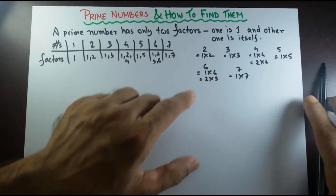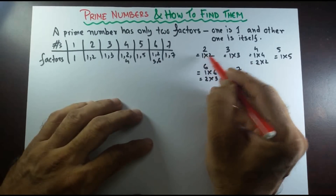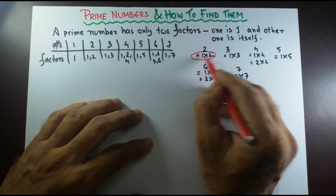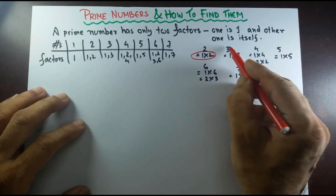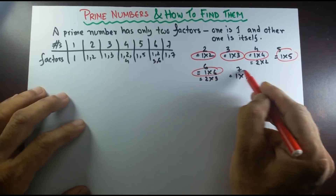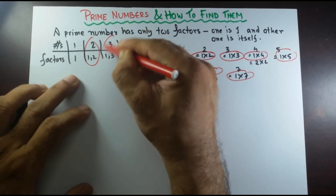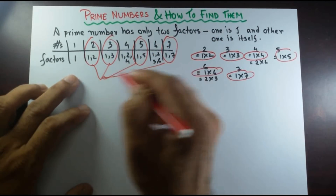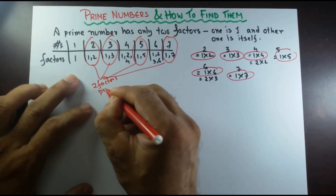Any number can be written as the product of two factors — one is 1, and another one is itself. 2 is 1 times 2; 3 is 1 times 3. Any number that has only these two factors — like 2, 3, 5, and 7 — each having exactly two factors, we call them prime numbers.